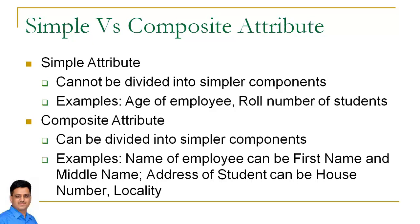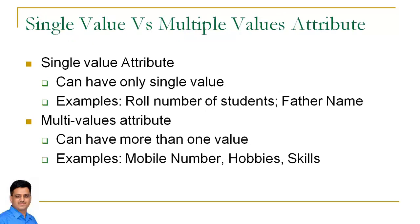Jis column ko hum further break nahin kar sakte, us column ko hum simple attribute baanenge. For example, roll number or age are simple attributes kyunki they cannot be further broken. Jabki address ya name ko further break kiya ja sakta hai, toh that's why hum unko composite attribute bolenge.